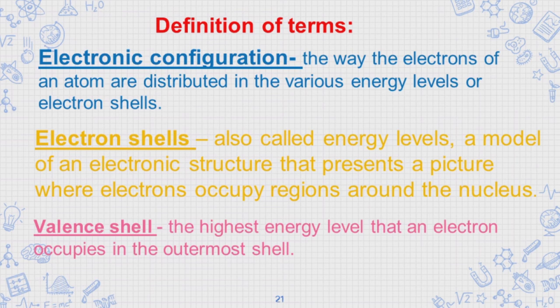Try to remember these terms. 1. Electronic configuration: the way the electrons of an atom are distributed in the various energy levels or electron shells.